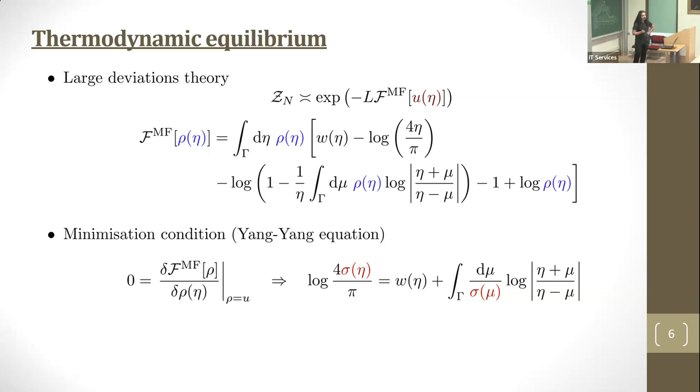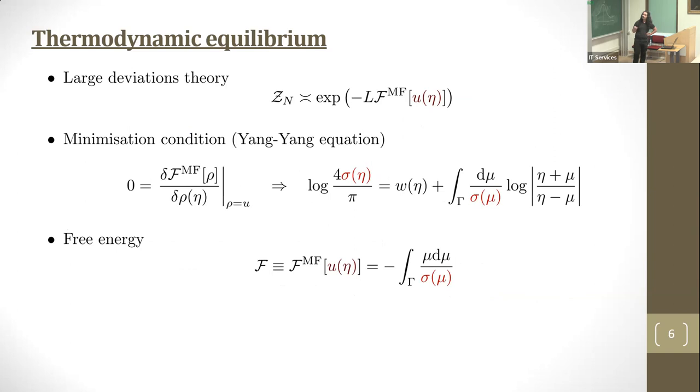Minimizing this entropy yields the Yang-Yang equation, which I wrote in terms of sigma instead of U for compactness. This equation relates sigma and by extension U via the nonlinear dispersion relation to the Gibbs weight W. This characterizes my thermodynamic equilibrium—the minimal free energy state. Here I assume there was a unique minimum. I can define the free energy as the evaluation of this functional at the minimizer. I can also define entropy, which takes a very simple expression in terms of sigma. This minimal free energy state is also the maximal entropy state—the most probable given a Gibbs weight.